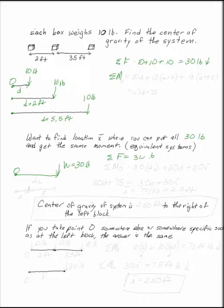Now I need to deal with these distances. The sum of the moments at O is 10 times D, whatever D is, plus 10 times D plus 2, plus 10 times D plus 5 and a half. That ends up being 30D plus 75.